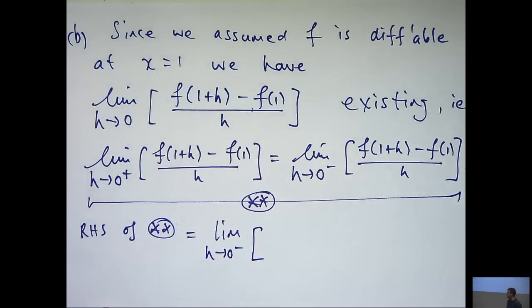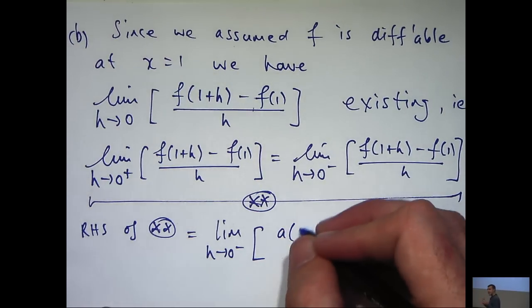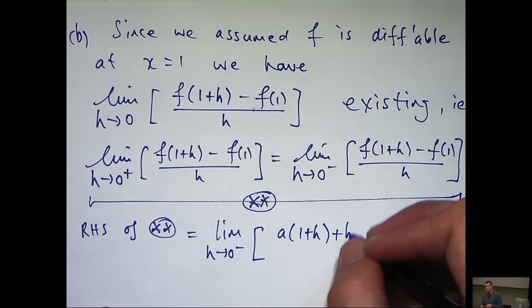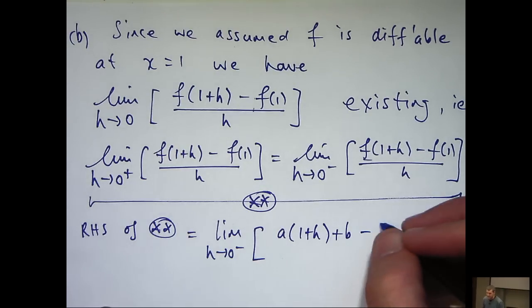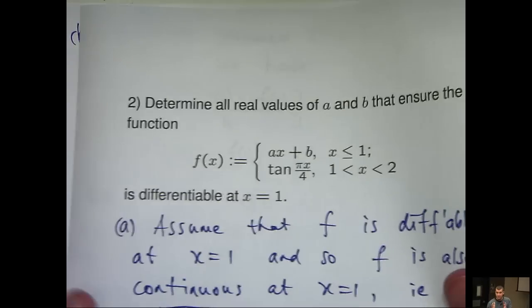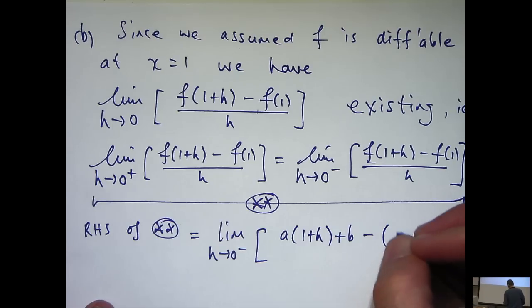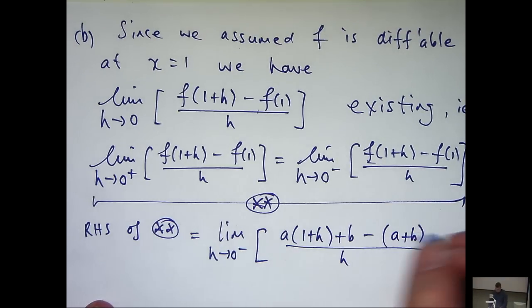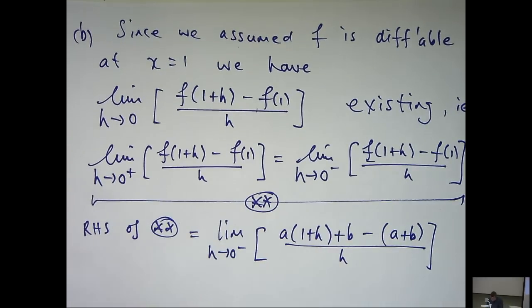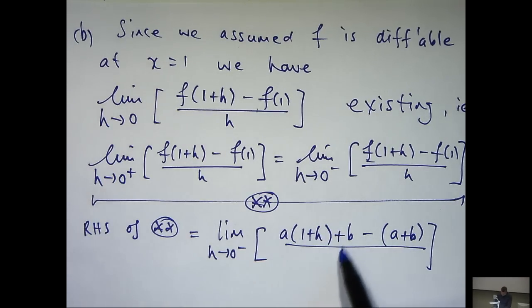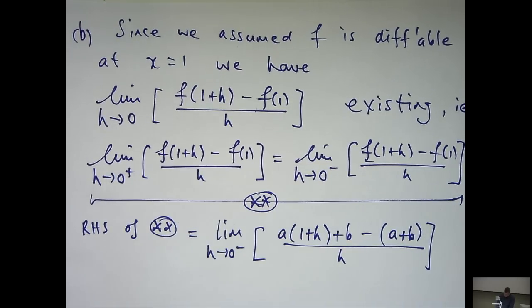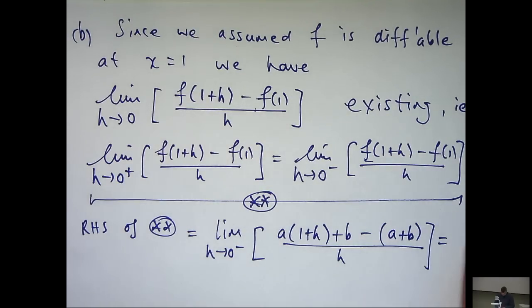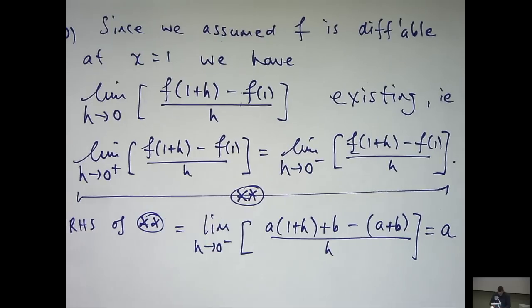So, I'm going to get a times 1 plus h in brackets plus b. That's this term here minus f of 1. When x equals 1 this is going to be a plus b all over h. So, can I simplify that? Well, if I expand the brackets, the a's will cancel out, the b's will cancel out and I'll actually get ah all over h and I can cancel the h's out. So, actually this limit, although it looks complicated is a. So, that was pretty easy.